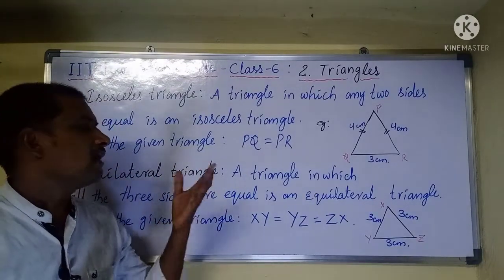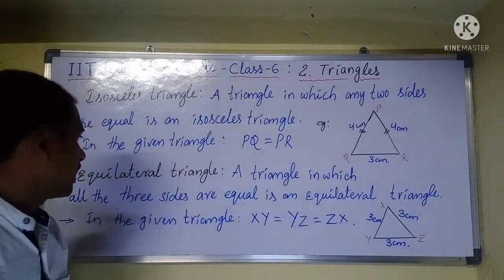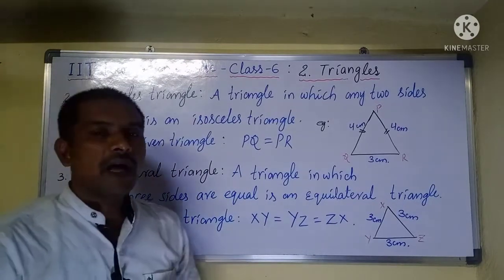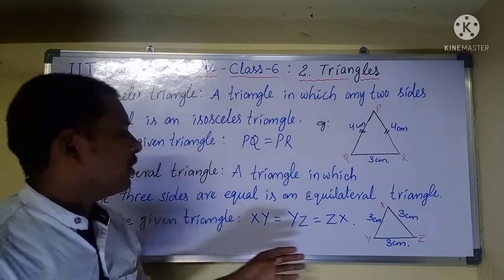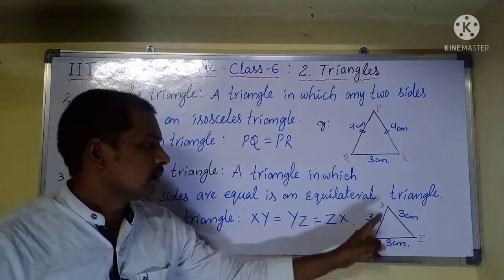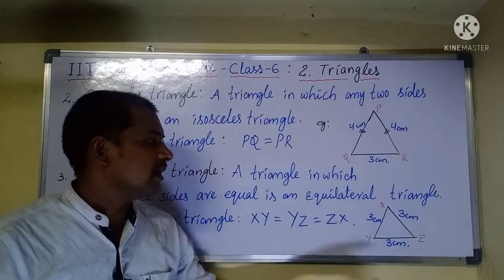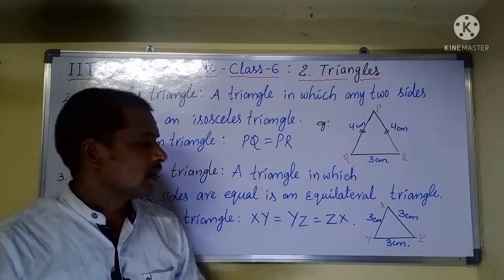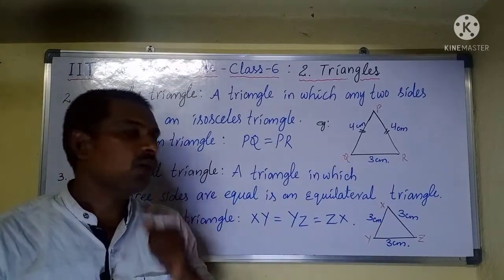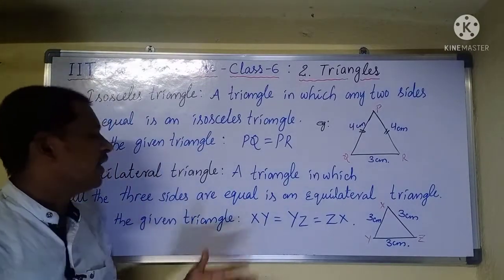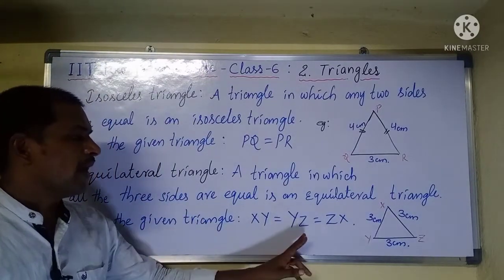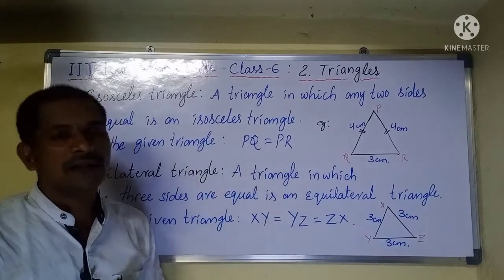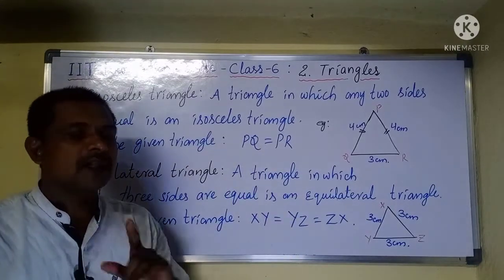The third type is an equilateral triangle. A triangle in which all three sides are equal is called an equilateral triangle. For example, in triangle XYZ, side XY, side XZ, and side YZ are all 3 centimeters. Since XY equals YZ equals ZX, all three sides are equal, so this is called an equilateral triangle.